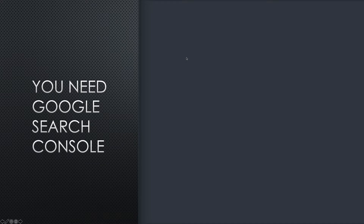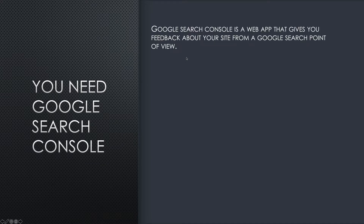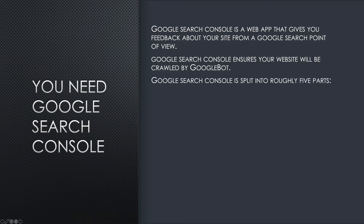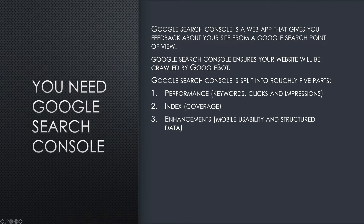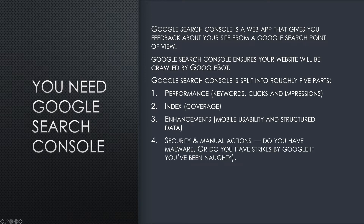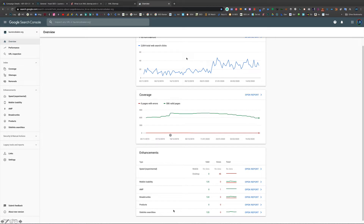You need Google Search Console — without a doubt, you definitely need it. It's a web app that gives you feedback about your site from a Google Search point of view, and it guarantees you're going to be crawled by Google. Google Search Console is split into roughly five parts: Performance — which keywords, clicks, impressions (how many times your search result has been seen in the SERPs). Index — all about coverage. Enhancements — about mobile usability and structured data. Security — if you've got malware, it will tell you. Manual actions — if you've broken a quality guideline, you'll have a manual action against you. Links — incoming and outgoing. It's one of the best tools and it's free.